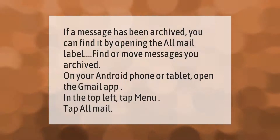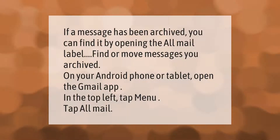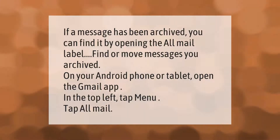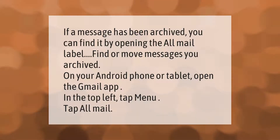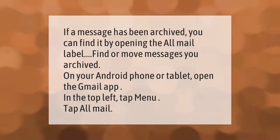If a message has been archived, you can find it by opening the All Mail label. To find or move messages you archived on your Android phone or tablet, open the Gmail app and in the top left tap Menu, then tap All Mail.